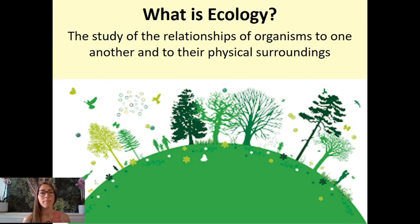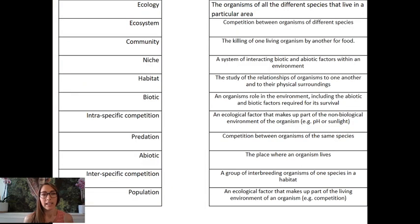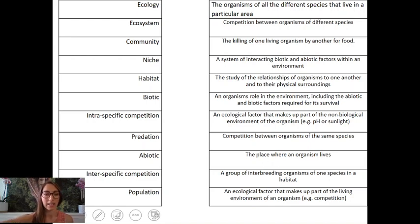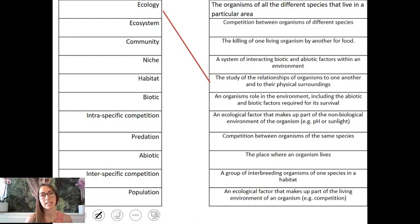So what is ecology? Ecology is basically the study of relationships of organisms to one another and their physical surroundings — it's the biological branch that studies ecosystems. In your activity you were asked to identify which definitions match each key term. Ecology is the study of how organisms interact with the biotic (living) factors and also the abiotic (non-living) factors of an ecosystem.